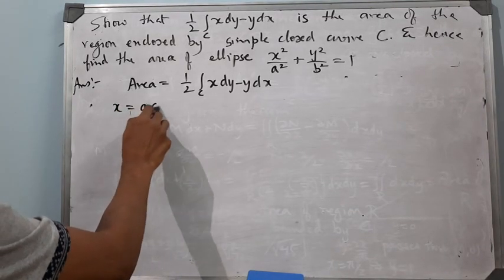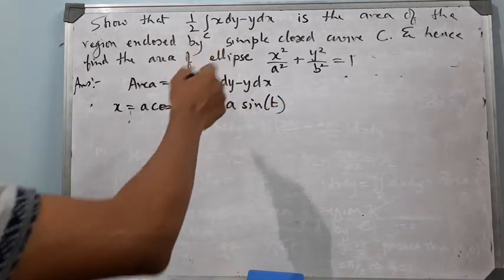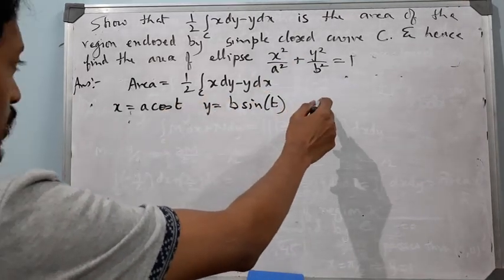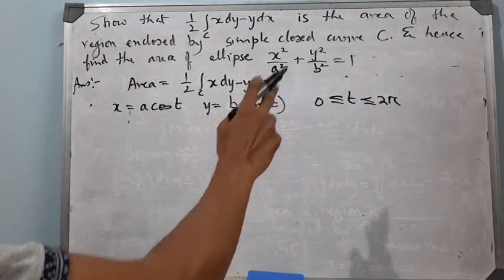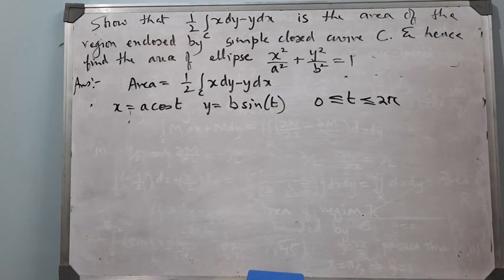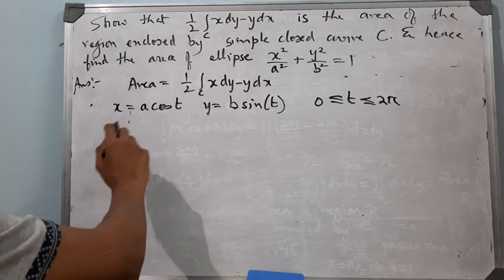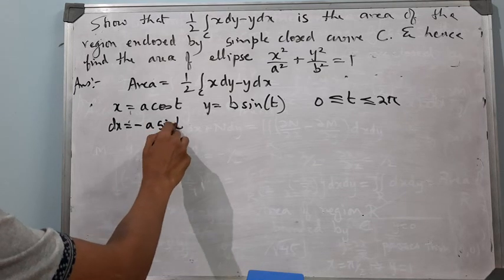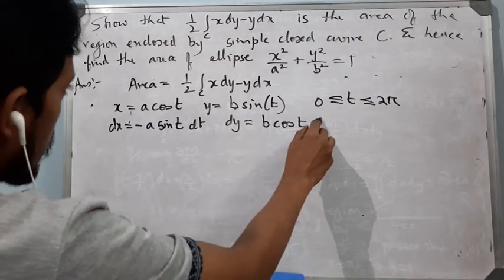We take x = a cos t, y = b sin t. Note that t is a parameter and not necessarily the angle made by the line joining the point with the origin. For the complete closed curve, t varies from 0 to 2π.